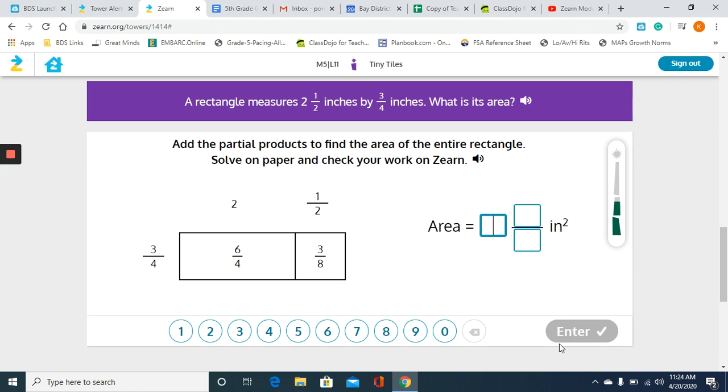So now they want us to add the partial products to find the area of the entire rectangle. It says to solve on paper and check your work on here. I would definitely have some scratch paper or an expo board, a marker, something that you can write this out. We're going to add 6/4 plus 3/8. Again, we have to find a common denominator. You cannot add fractions with unlike denominators. I know that 4 and 8 have a common denominator of 8, so I'm going to change my 6/4 to 8 by multiplying both the 6 and the 4 times 2. So 6 times 2 is 12, 4 times 2 is 8. So I have 12/8 plus 3/8, that's 15/8. That's going to give me 1 and 7/8.